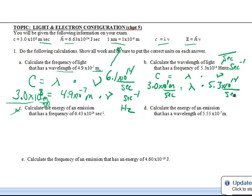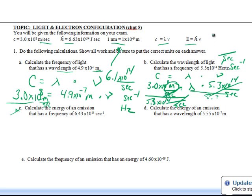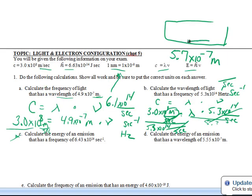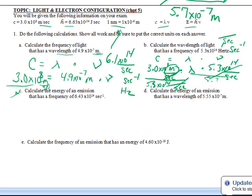I'm going to write per second because I want to show you how it cancels out. Now you've got to get this variable alone, so divide through by 5.3×10¹⁴ per second. You've got per second on the bottom, per second up here, so you're going to be cancelling out your per seconds. Then you end up with just meters left. When you do 3.0 divided by 5.3×10¹⁴, you end up with 5.7×10⁻⁷ meters. The per seconds are gone and you're left with meters.